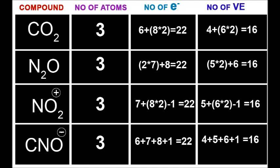Number of electrons in N2O: nitrogen has atomic number 7. We have 2 nitrogens, so 7 plus 7 is 14. Then oxygen is 8, so 14 plus 8 equals 22.